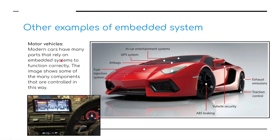Here are some examples from a motor vehicle. You can see we've got a Lamborghini here with many different embedded systems, such as the entertainment system, GPS, airbag control, crash sensors, the fuel injection system, ABS braking, vehicle security, traction control, and exhaust emissions. All these little mini systems inside your vehicle are controlled by embedded systems. A lot of these systems can be controlled internally via the cockpit of the car, such as GPS, tire pressures, fuel level and various other readings.